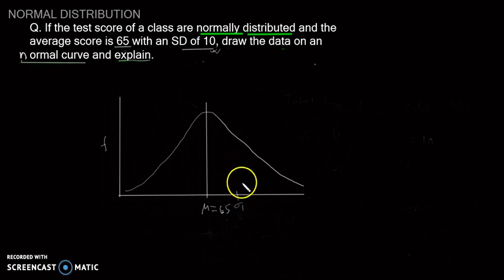At sigma 1, the score is 75, and the percentage of students that scored between 65 and 75, as per the z-score table, is 34.13%. This is the empirical rule.